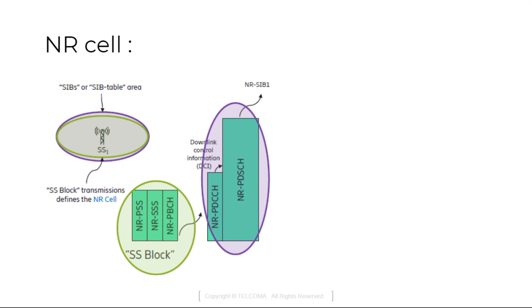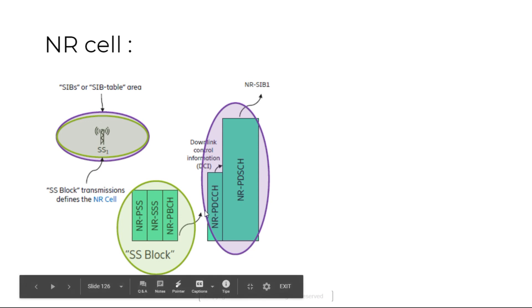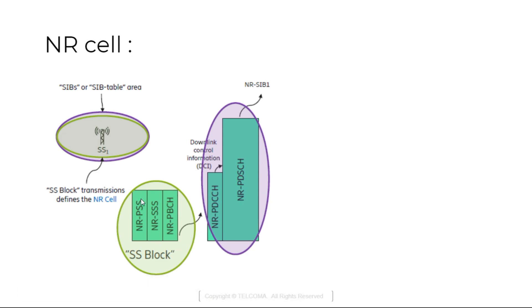As we can see here, the new radio cell SS block — synchronization signal block — carries the new radio primary synchronization signal, new radio secondary synchronization signal, and new radio physical broadcast channel.